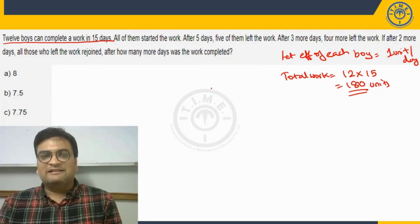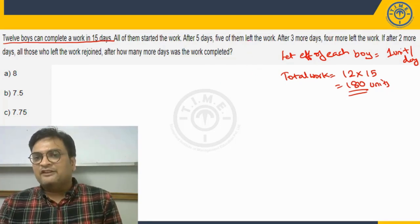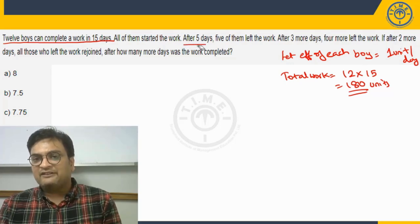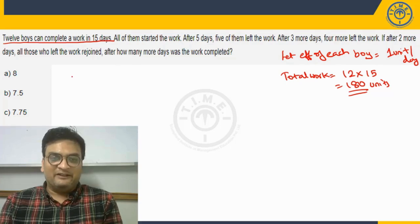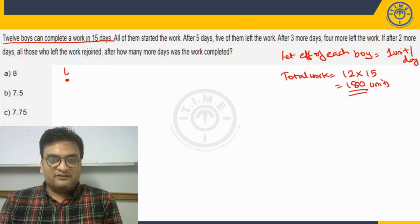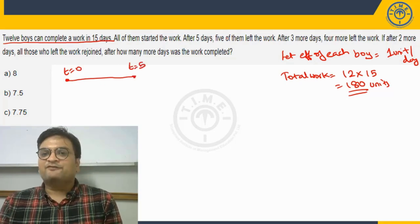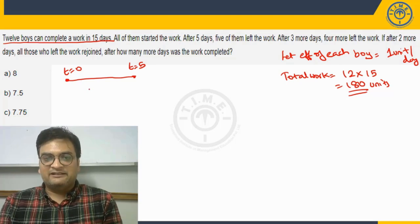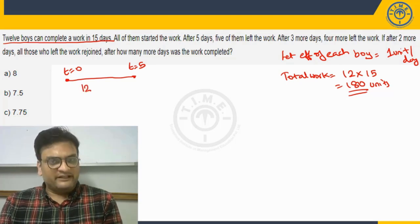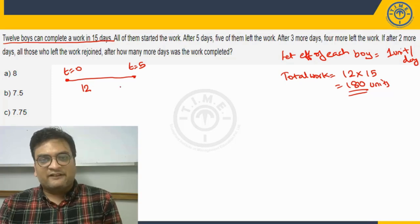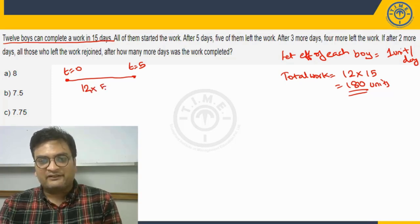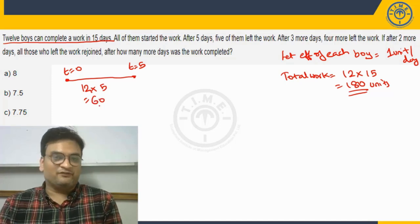All of them started the work. So all these twelve boys started the work. After five days, five of them left the work. So that means at t equal to zero they started. After five days, so that means after working for five days, five of them left. So that means for this period, can I say there were twelve people working, their combined efficiency will be twelve units and for how long have they worked, five days. So that means in this red zone, they would have covered sixty units of work.